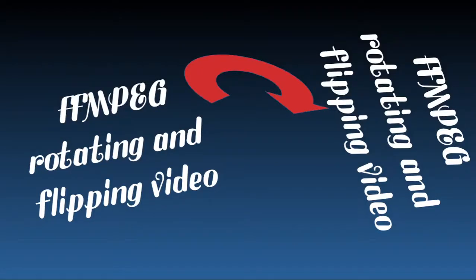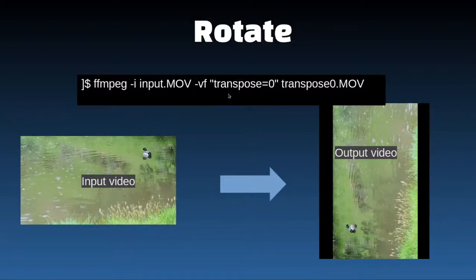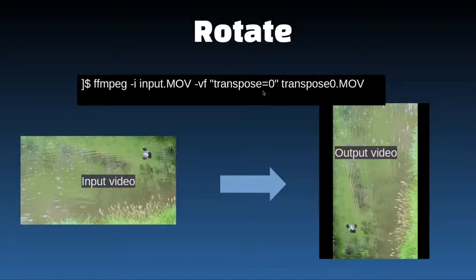So, 'transpose' is the command to rotate videos using FFmpeg. The syntax is: dash-i input.mp4, then transpose equals zero. You can see it rotates 90 degrees but also does a mirror image. There are four different ways to rotate: transpose equals zero, one, two, and three. I'll show you each one so you get an idea of what it does.